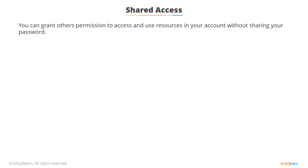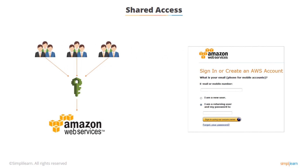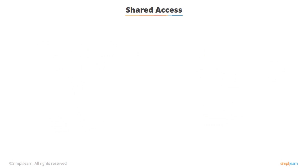IAM provides shared access to your account, which allows you to grant other people in your organization permission to administer and use AWS resources in your account without you having to share your password or access key. When you set up your AWS account for the first time, you give an email address and a password, and this is effectively your root account. You obviously don't want to be sharing this, but as an admin user, you can use IAM to share access.